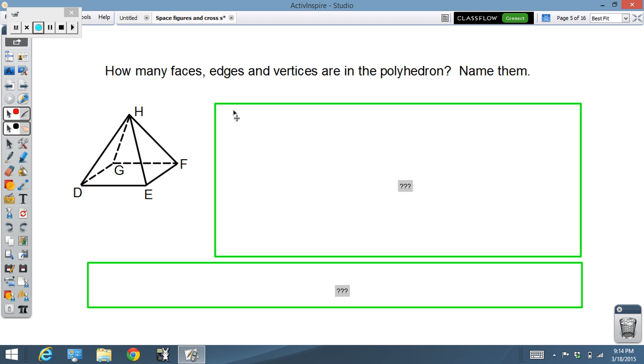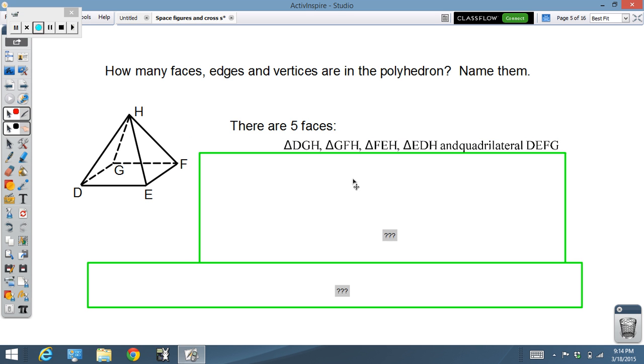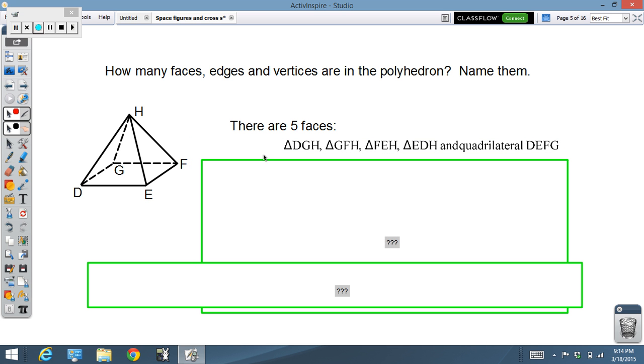So, let's look at this figure. How many faces, how many edges, and how many vertices are in the polyhedron, and name them. Pause for a sec, see if you can do it. Here we go with the answers. Five faces, and they are triangles DGH, triangle GFH, triangle FEH. So, all four of these triangles up here, plus the quadrilateral on the bottom, DGFE, or DEFG, I guess I called it. So, there are five faces.